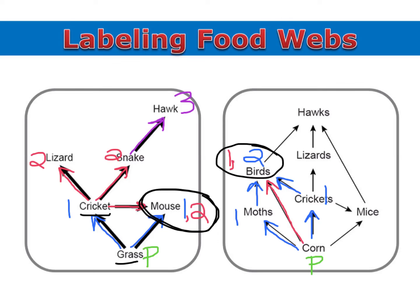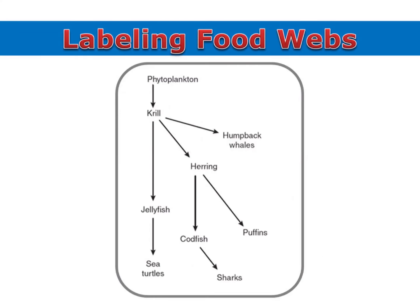So here I see that the birds are primary and secondary consumers because they eat moths, corn, and crickets. It's also important to understand that you don't just label from the bottom up — you start at the producer. And in this case, the producer is at the top, and there's no rule against that.